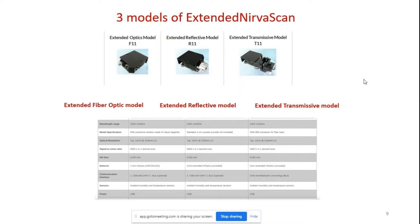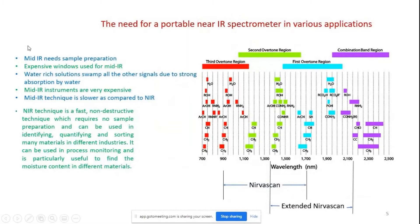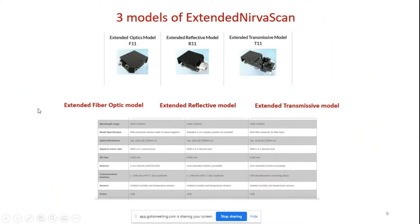We also have an extended Nervascan model working from 1350 to 2150 nanometers, detecting first overtone signals rather than the second overtone of the standard model. It also comes in fiber optic, reflective, and transmissive versions. It has 12 nanometer resolution versus 10 nanometer for the standard. The standard Nervascan is about $2,000; the extended models are around $5,000 due to the greater heat and complexity involved at longer wavelengths.